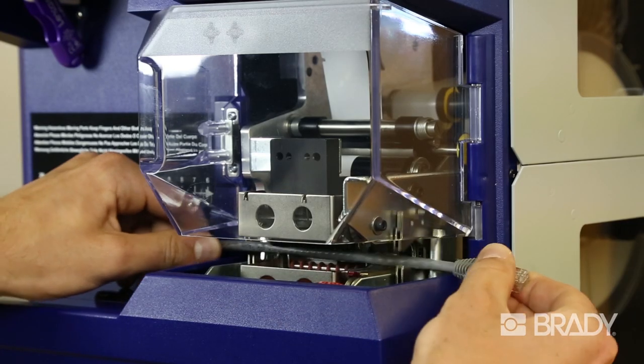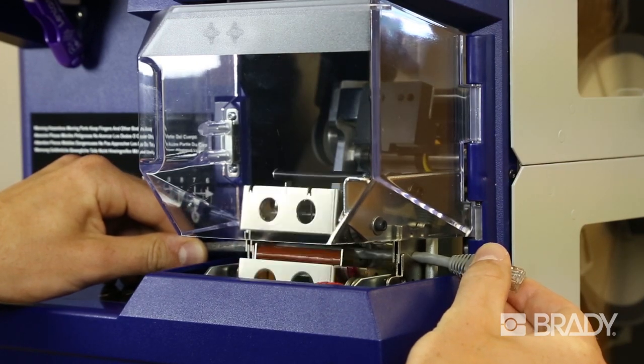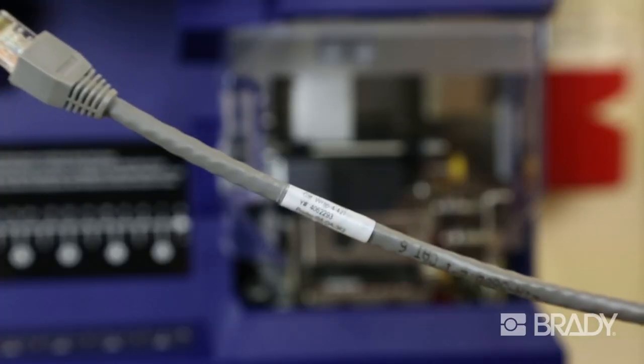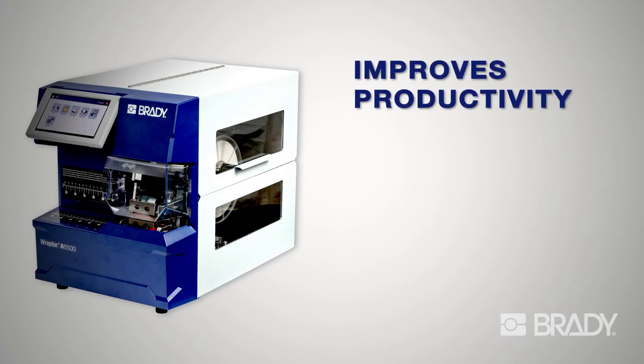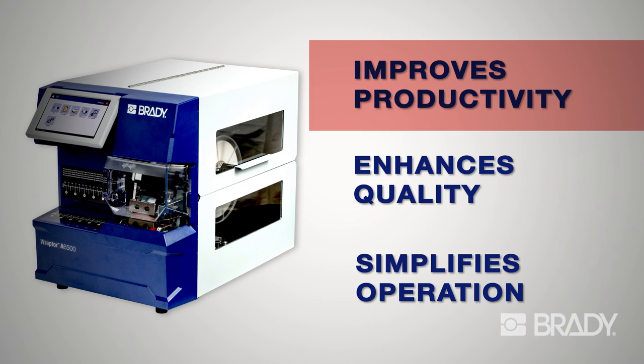The Raptor A6500 system combines the printing and application of labels in a single unit. It turns a series of labor-intensive, inefficient tasks into a modern automated process that improves productivity, enhances the quality of your wire identification, and simplifies the process.